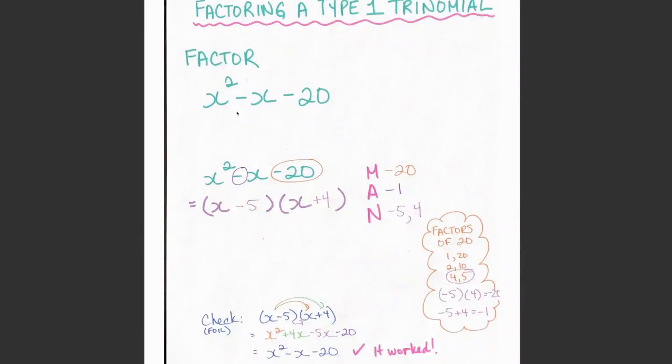When I look at this, if I'm asked to factor it, I don't see a greatest common factor because this is a 1 in front of the x², a -1 in front of the x, and -20. There's nothing besides 1 that will go into all three of those numbers, so I can't use the greatest common factoring strategy to factor this.